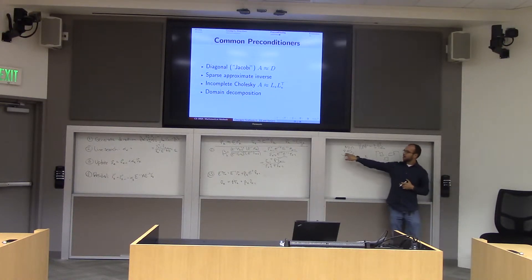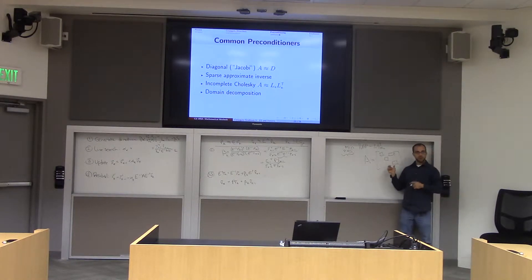One thing I could do is constrain my preconditioner P to only have non-zeroes where A does. I have no guarantee that the inverse of A actually satisfies this property, but oftentimes you can write down sparsity patterns that are kind of reasonable guesses for what you might think might happen.